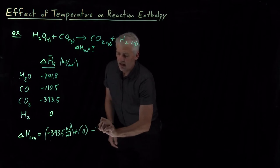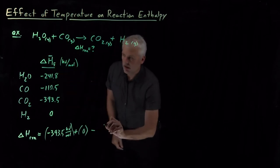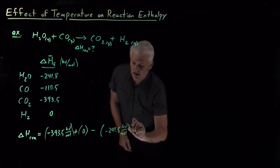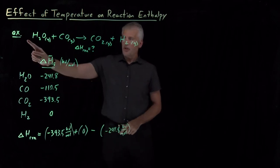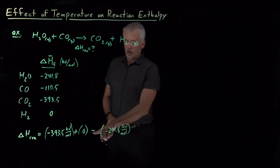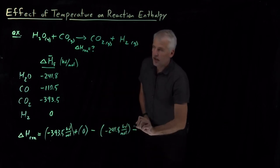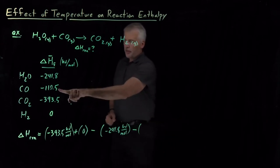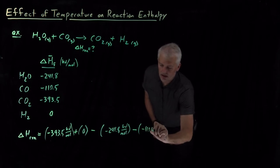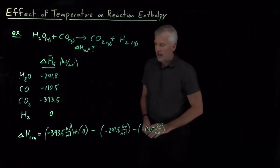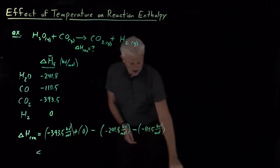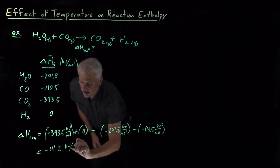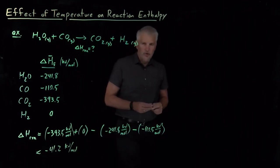Adding the enthalpy of formation for H₂O — negative 241.8 — being careful with signs: the enthalpy of formation itself is negative and the stoichiometric coefficient in front of H₂O is negative 1 because it's a reactant. Likewise for carbon monoxide, the stoichiometric coefficient is negative 1 and its enthalpy of formation is negative 110.5. Combining those numbers, we find the enthalpy of this reaction is negative 41.2 kilojoules per mole.